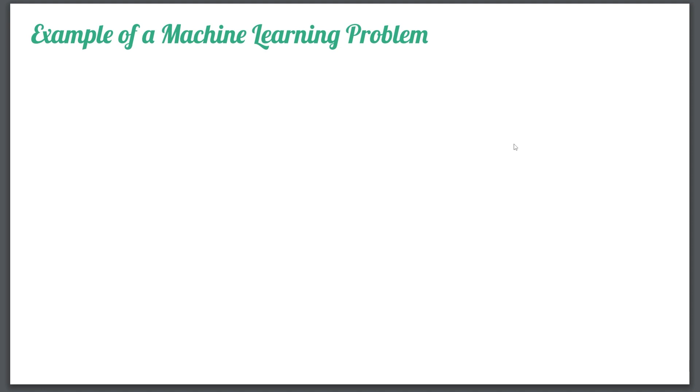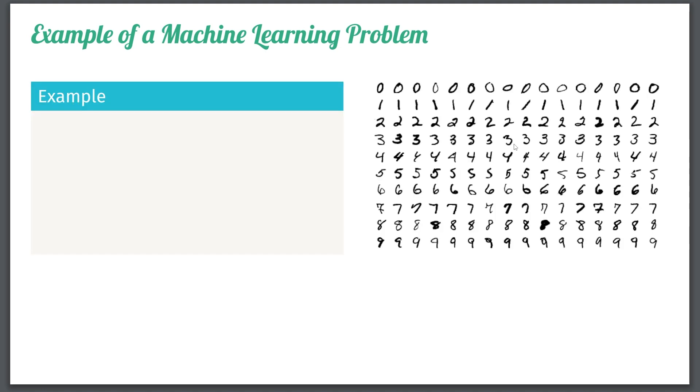So before giving any technical definitions, let's just look at a single example. Here we have a lot of hand-drawn numbers. You can see here on the right we have lots of zeros on the first row, and then lots of ones, lots of twos, and so on, and they're all drawn slightly different. That's just because people have different handwriting.